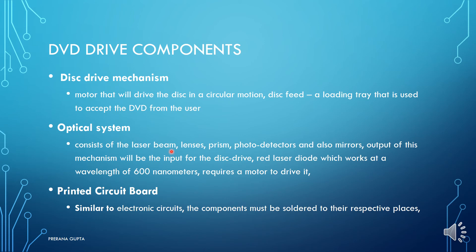The optical system mainly consists of laser beam, lenses, prisms, photo detectors, and mirrors. The output of the optical mechanism is the input of the disc drive. The laser beam uses a red laser diode working at a wavelength of 600 nanometers. The optical system also requires a motor to drive the laser system. The third component is the printed circuit board (PCB), which must have correct placement of all ICs, resistors, and capacitors.